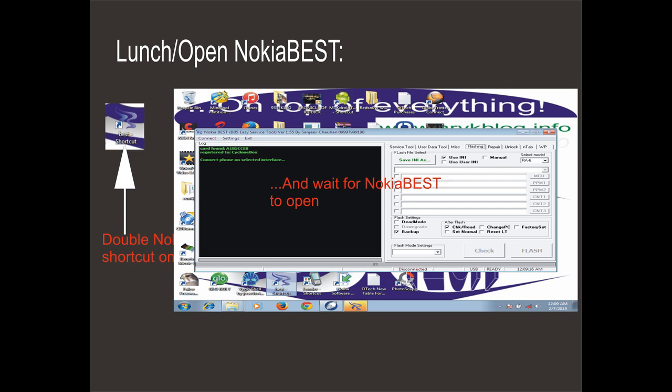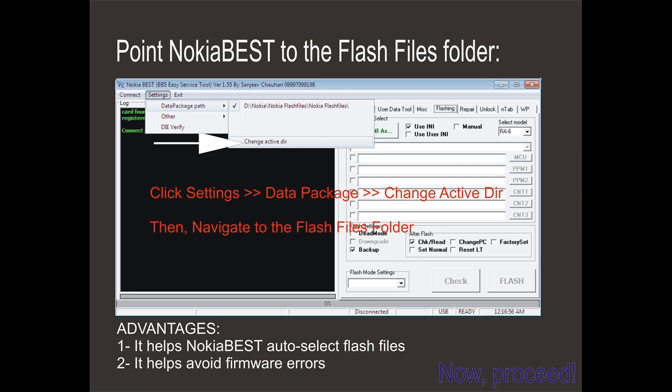Now double-click the Noji apps icon on your PC desktop to open the Noji apps program. Once opened, all you have to do is point Noji apps to the Nokia phone flash files folder we created. Doing this will help Noji apps to auto-select flash files for whichever Nokia phone you wish to flash. Follow the guide on the screen to point Noji apps to the flash files folder we created earlier.